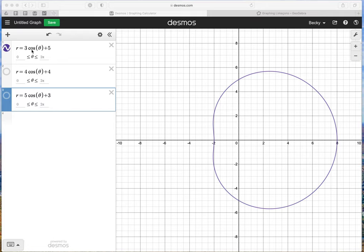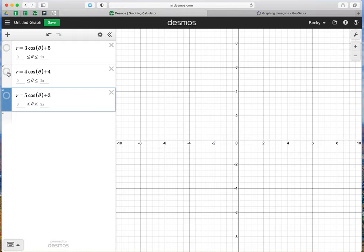We had R equals 3 cosine theta plus 5, so just as a review, this was our dimpled Limasson. I'm going to switch now and graph R equals 4 cosine theta plus 4. This was our cardioid, remember it looks like a heart, and the last one we graphed was 5 cosine theta plus 3, which is the Limasson with this inner loop.